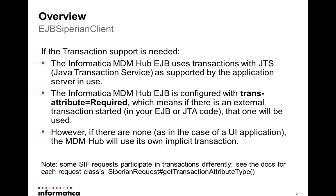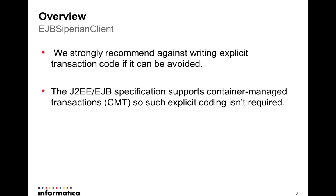If the transaction attribute is 'Required', then you can create your own transaction. If there is no transaction, then MDM hub will use its own implicit transactions — each SIF call will have its own separate transaction. You can check the transaction attribute type by calling request.getTransactionAttributeType() for each SIF call. We strongly recommend writing against explicit transaction code if it can be avoided, because JBoss EJP specification supports container managed transactions, so explicit coding is not required. You can use JBoss EJP with container managed transactions.